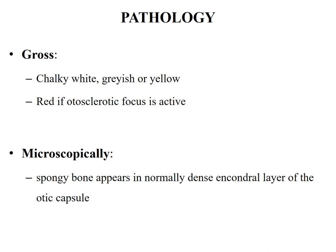Pathology: grossly, the otosclerotic lesion may appear chalky white, grayish, or yellow; however, in active lesions there will be increased vascularity giving a reddish appearance. Microscopically, the spongy bone appears in the normally dense enchondral layer of the otic capsule. In immature foci there will be numerous osteoblasts and osteoclasts and a lot of cement substance, while in mature foci there is less vascularity and laying of more bony material and cementum.